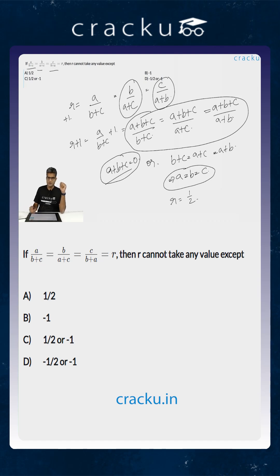If a plus b plus c is equal to 0, the value of r, which is basically equal to a divided by b plus c, will be equal to minus 1. So r will be either minus 1 or 1 by 2.